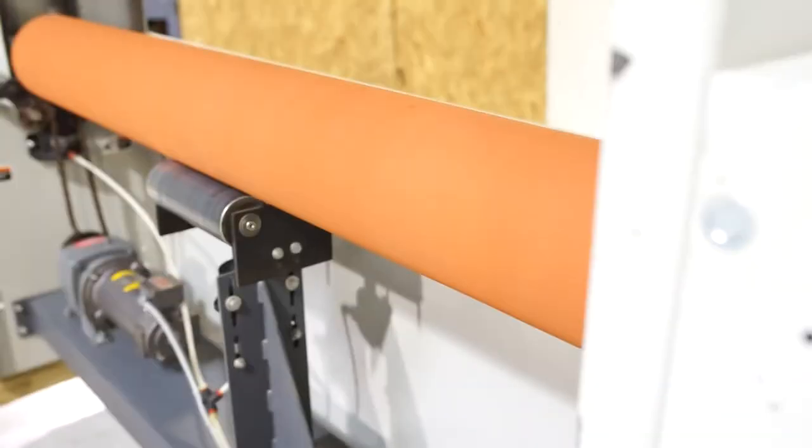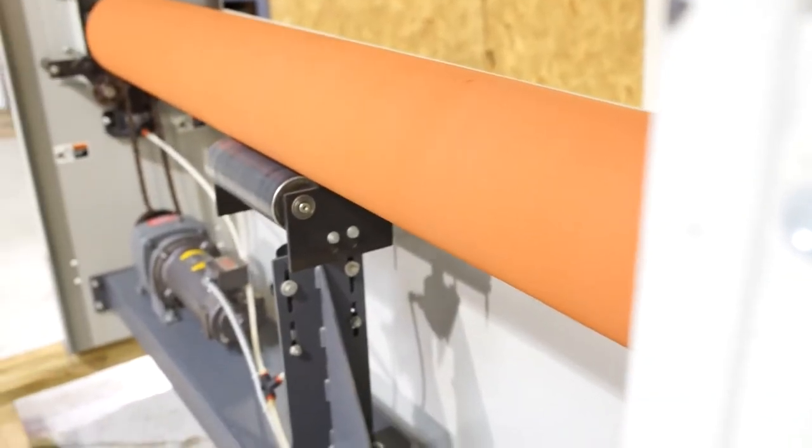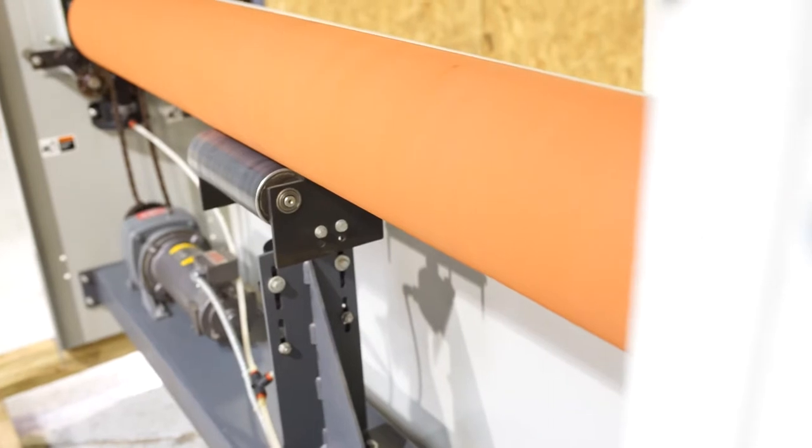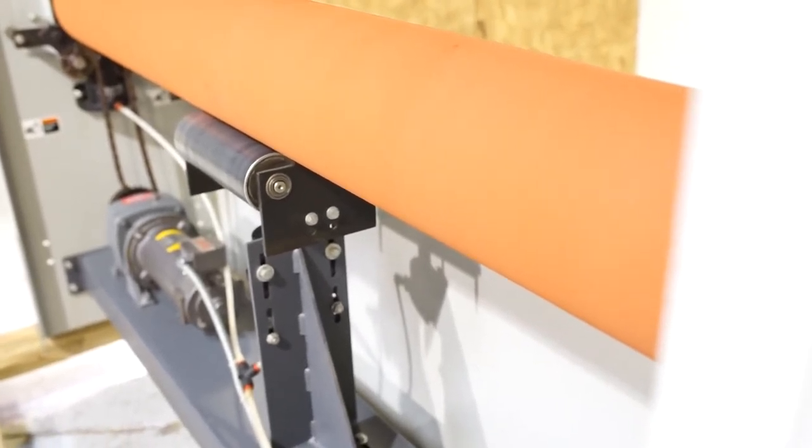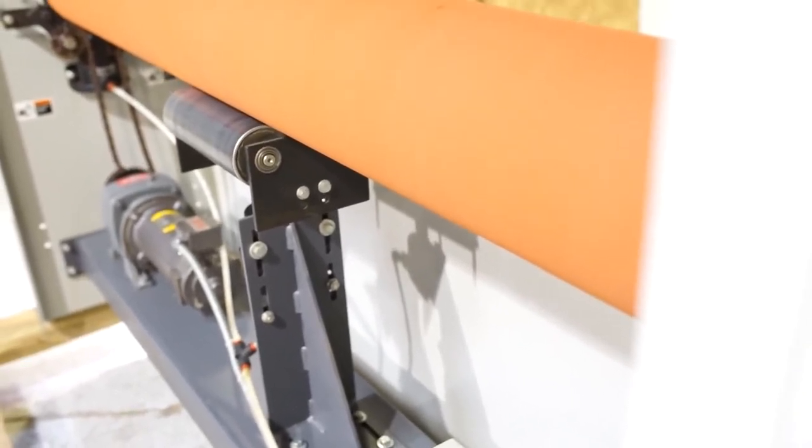You do have an emergency stop right here. When you hit the emergency stop, the bottom roll is going to drop and the machine is going to deactivate. Again, I'm going to put the bottom roll up again. I'm going to turn the machine back on.